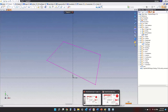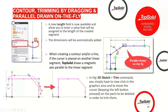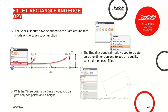A couple of other options: we've added special inputs to the path-around-face mode of edge copy from the 3D sketch. In the fillet command, when doing the same fillet on all vertices, there's a new equality constraint option. And with the three-point-by-base rectangle, there's a new height option. Let's look at how all of those function.